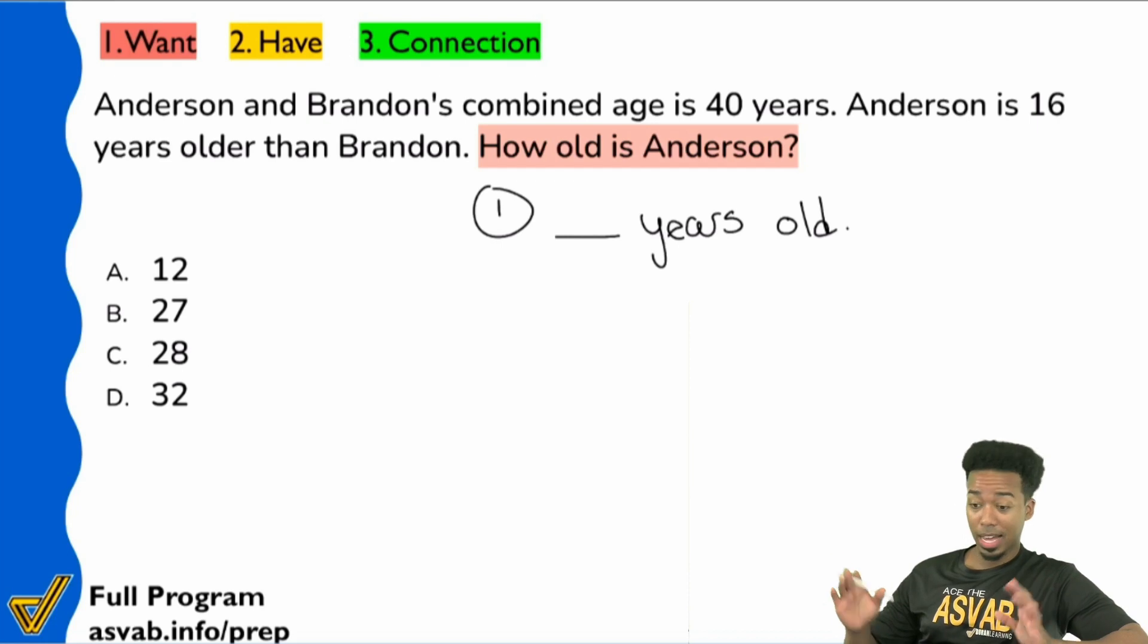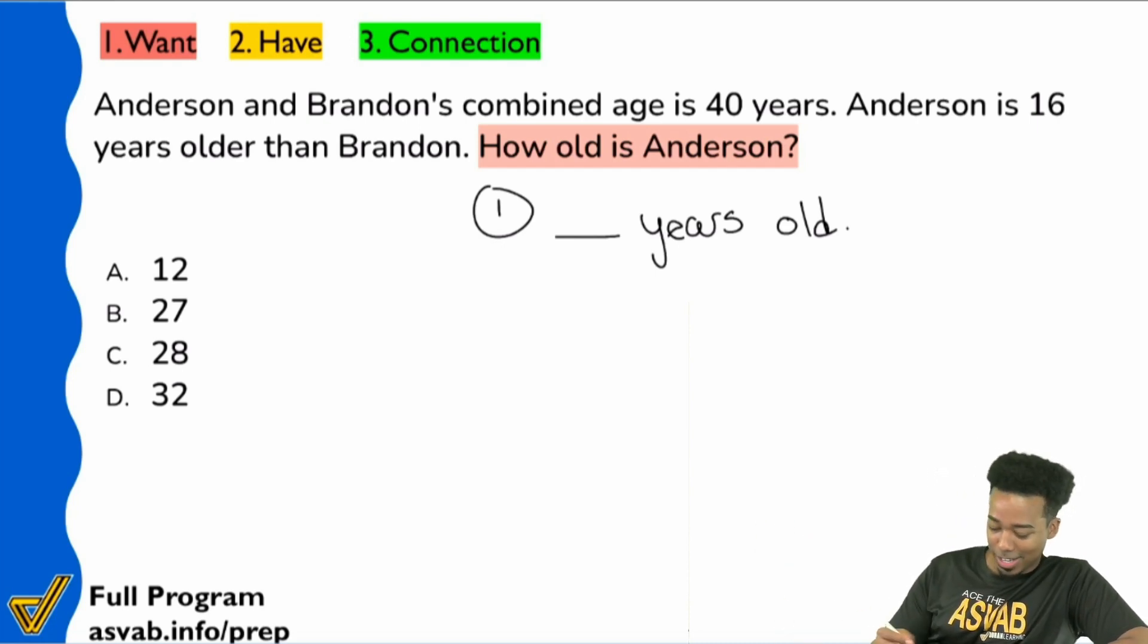So, guys, look. I told you guys time and time again, I'm 42 years old. If you don't believe me, I don't know what to tell you, man. So with that, here we go. How old is Anderson? Looking at the information, Anderson and Brandon's combined age is 40 years.